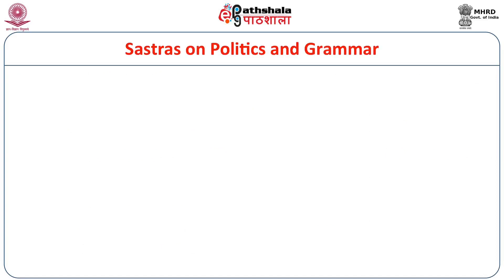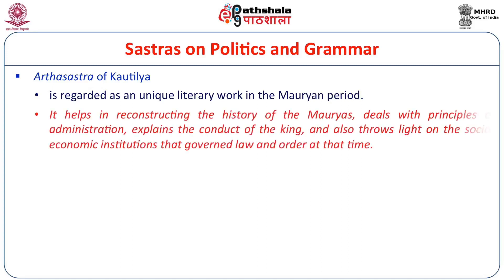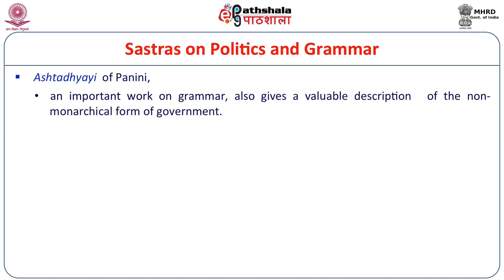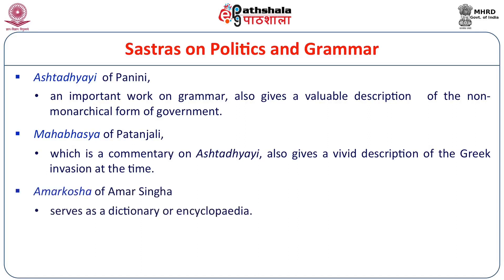We have Shastras on politics and grammar, like the Arthashastra of Kautilya, regarded as a unique literary work of the Mauryan period. It helps in reconstructing the history of the Mauryas, deals with principles of administration, explains the conduct of the king, and throws light on socio-economic institutions governing law and order. The Nitishastra of Kamandaka is another significant literary work on politics written in the Gupta period. Ashtadhyayi of Panini, an important work on grammar, gives a valuable description of the non-monarchical form of government. Mahabhashya of Patanjali, a commentary on Ashtadhyayi, gives a vivid description of the Greek invasions of the time. Amarakosha of Amarasimha is in the nature of a dictionary or encyclopedia.